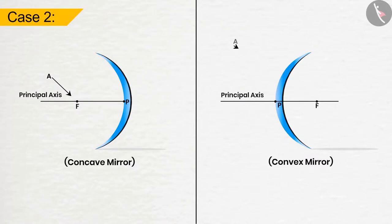Case 2. If the ray of light passes through the focus of the concave mirror or appears to move towards the focus of the convex mirror, it will emerge parallel to the principal axis after reflection.